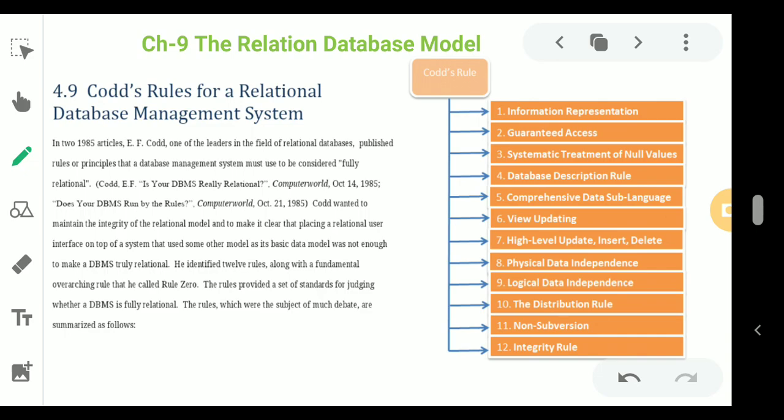Rule 6 is the View Updating Rule. Data can be presented to the user in different logical combinations rather than showing the whole table at once. Different instances can be created, and a specific view of the required data can be given to the user, rather than exposing all table data.